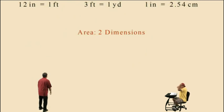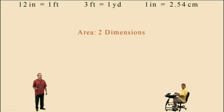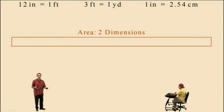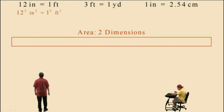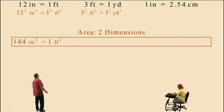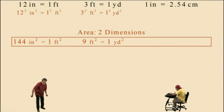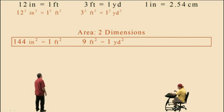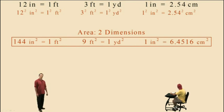All right, break's over. Let's deal with area. Up there are our equivalent relationships for length. Length is one dimension, but area is two dimensions. So how do we get the equivalent relationships of area from the equivalent relationships of length? You square both sides. If we take 12 inches equals one foot and square both sides, we get 144 square inches equals one square foot. If we take 3 feet equals one yard and square both sides, we get 9 square feet equals one square yard. And taking 1 inch equals 2.54 centimeters and squaring both sides gives 1 square inch equals 6.4516 square centimeters.